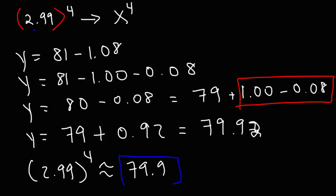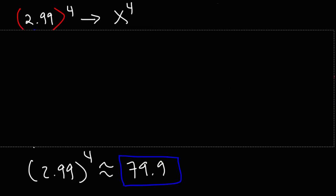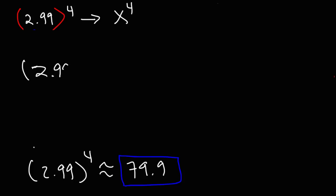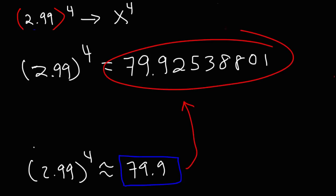So let's see if our answer is accurate. So we're going to use a calculator to get the exact answer or close to the exact answer. So 2.99 raised to the fourth power. Here's what I got. It's 79.92538801 and my calculator stops there. So 79.9 is very close to this number. I mean, it's the rounded value. 79.925 rounds to 79.9.